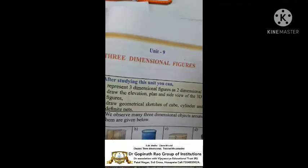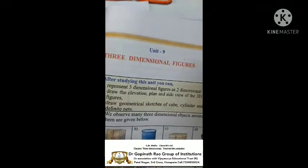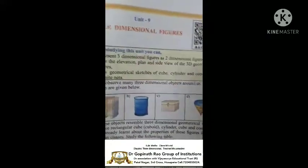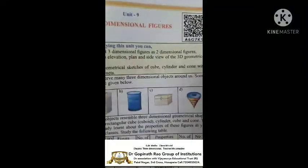What is the difference between 2D dimensional and 3D dimensional? 2D dimensional means shapes like square and rectangle. 3D dimensional means shapes like cube, cuboid, and cylinder.